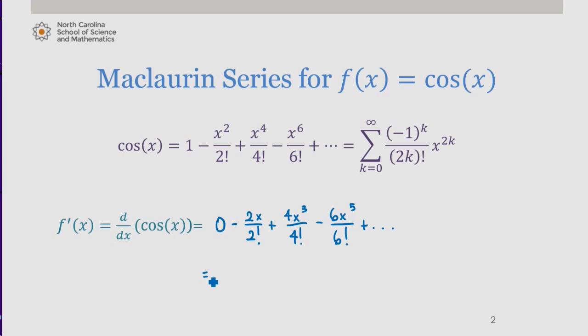If we clean this up, we see this is equal to negative x plus x cubed over 3 factorial minus x to the fifth over 5 factorial and so on.